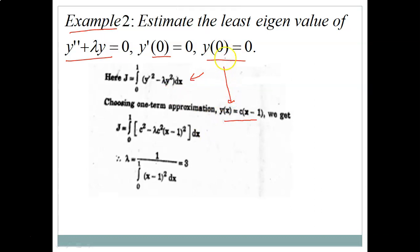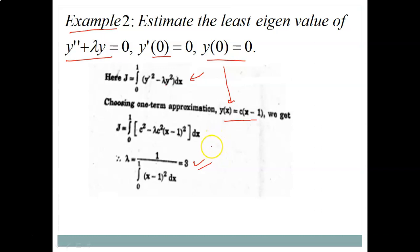For the eigenvalue problem, a one-term approximation is chosen such that y(0) = 0. Substituting into J yields an expression in λ, and minimizing gives the least eigenvalue λ = 3. This can be compared with the exact eigenvalue value.